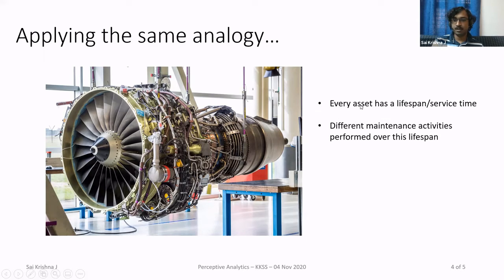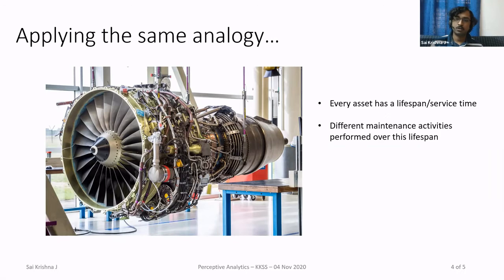Every asset — whether it's an engine, a generator, an elevator, or an escalator — has a lifespan or service time, and different maintenance activities are performed over that lifespan. In the aircraft industry, you have something called Maintenance, Repair, and Overhaul (MRO). Maintenance is the regular checks performed after every flight once the aircraft lands, since some parts are subjected to more wear and tear or excessive force at high speed.